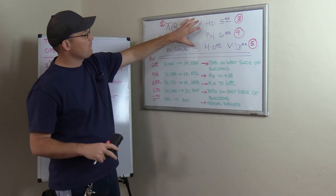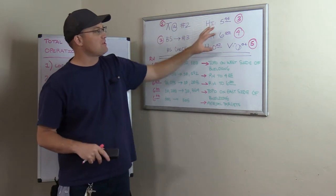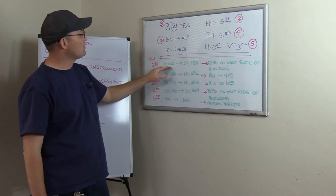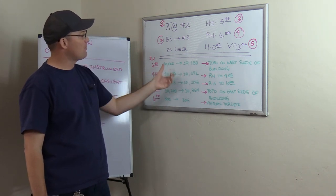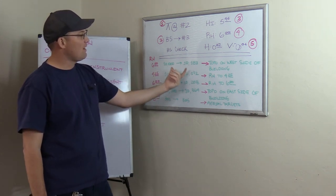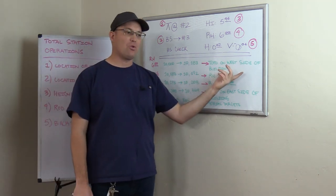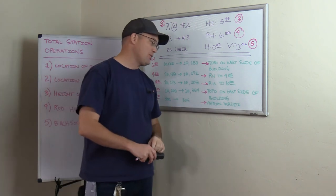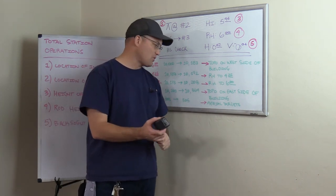So just to review at the top, we've got the information on our station set up with these five pieces of information. At the bottom, we want to know starting point number, ending point number for each group of points. And we want to know short description. What were those points for? And then we also note down when we change a rod height. That's really important. So that's what our total station notes look like.